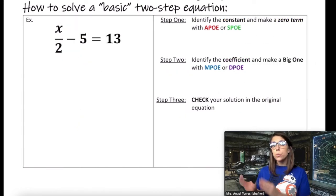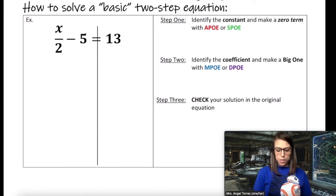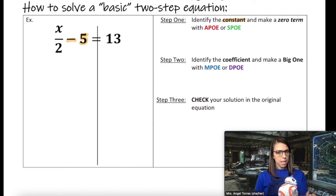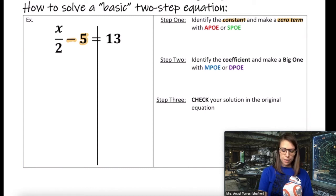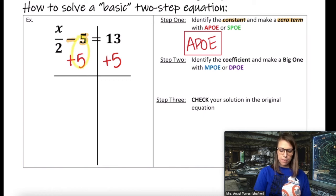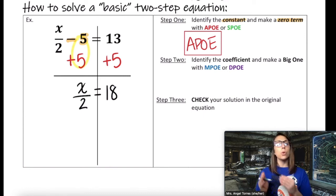Now we're going to do those same steps with a different basic two-step equation. I start the same way by putting a line down the middle of the equal sign, only looking at the side of the equation with the variable, which in this case is the left side. Step one: identify the constant. The constant here is minus 5 — thinking of that as negative 5. My goal is to make a zero term using APO or SPO. If it's a negative 5, I have to use APO to create that zero term. So let's add 5 to both sides. Negative 5 plus 5 is a zero term, leaving x divided by 2 on the left side. 13 plus 5 is 18, so one term has been eliminated and I'm left with only my variable term.